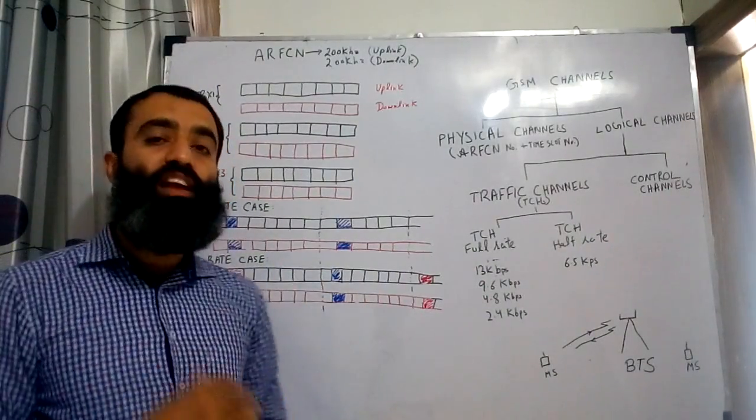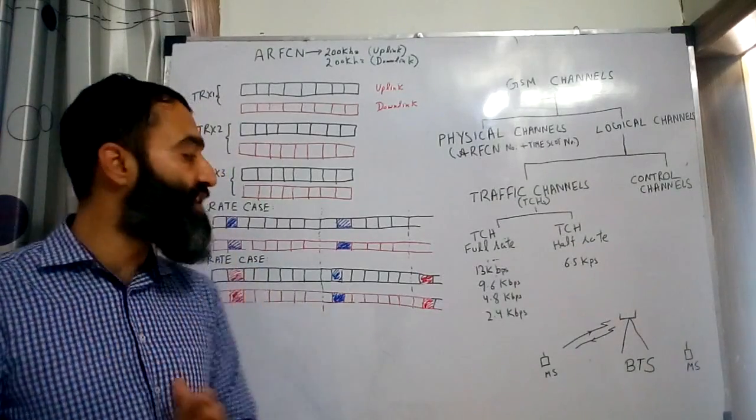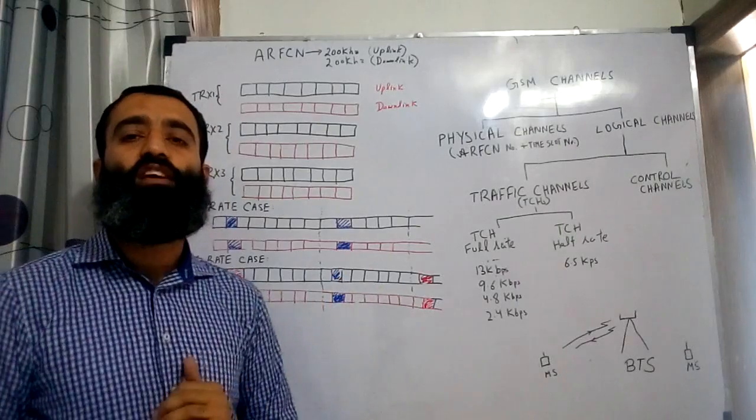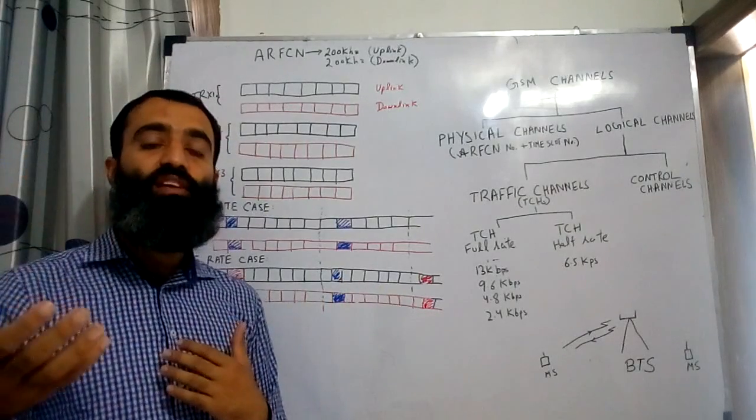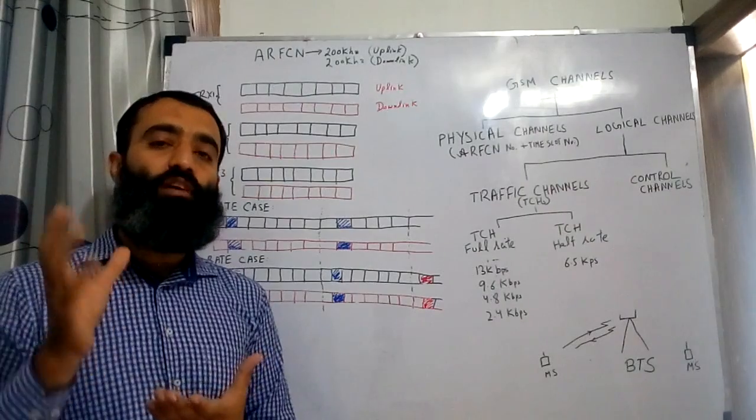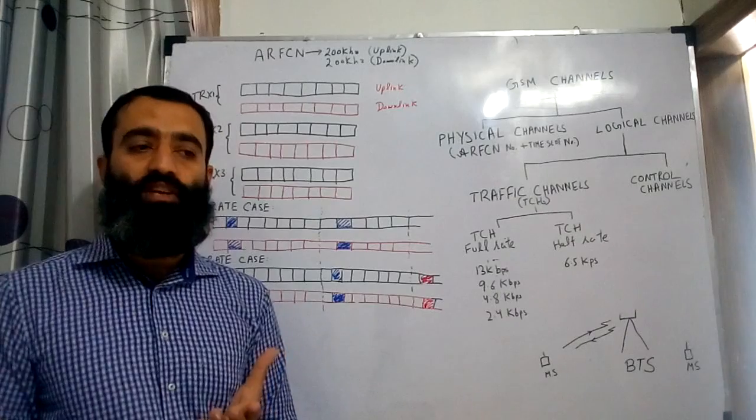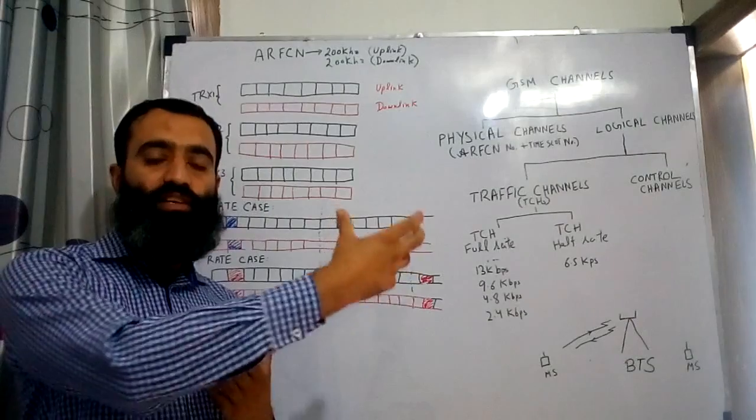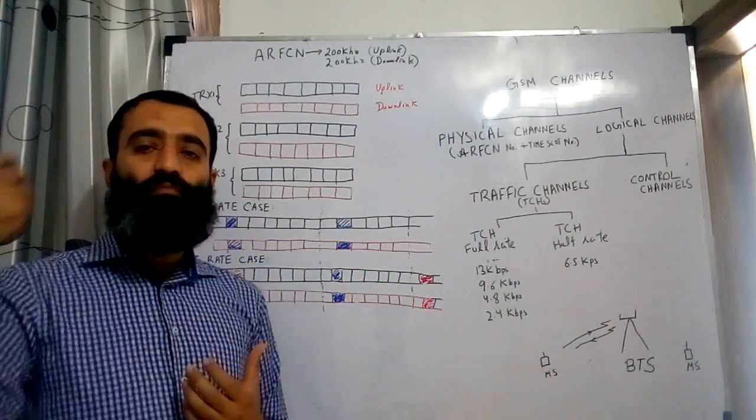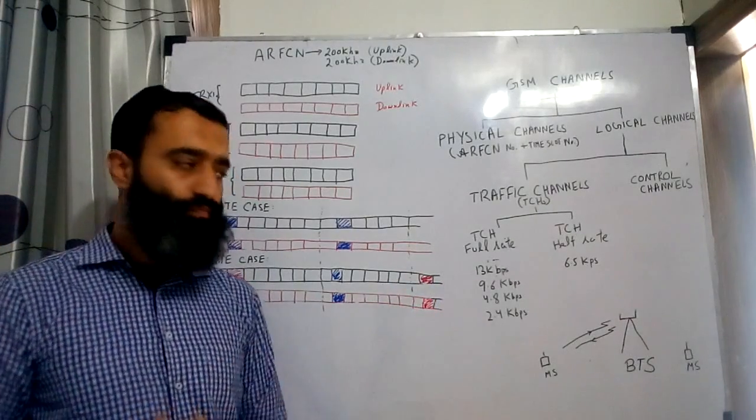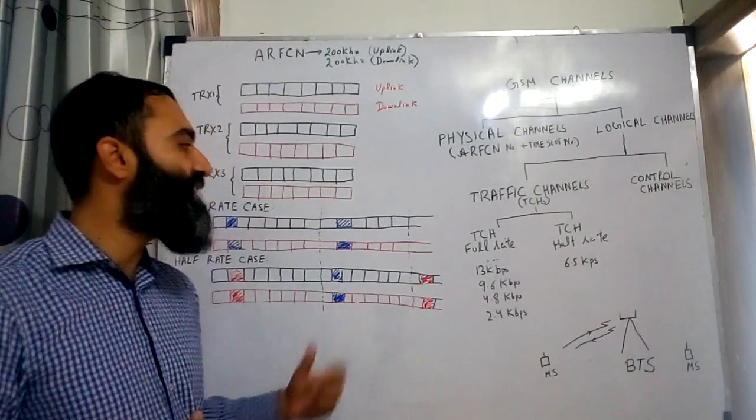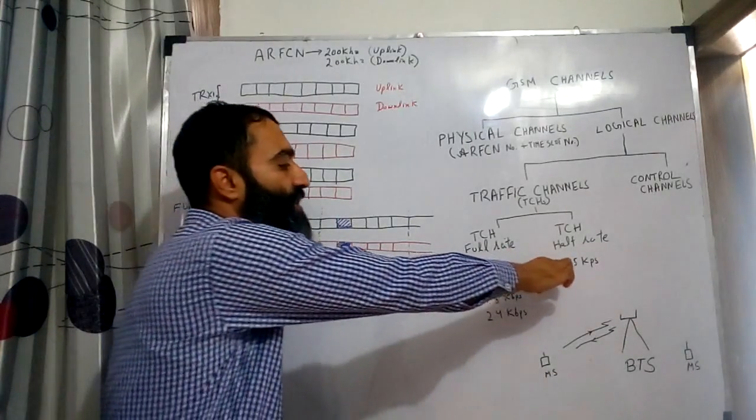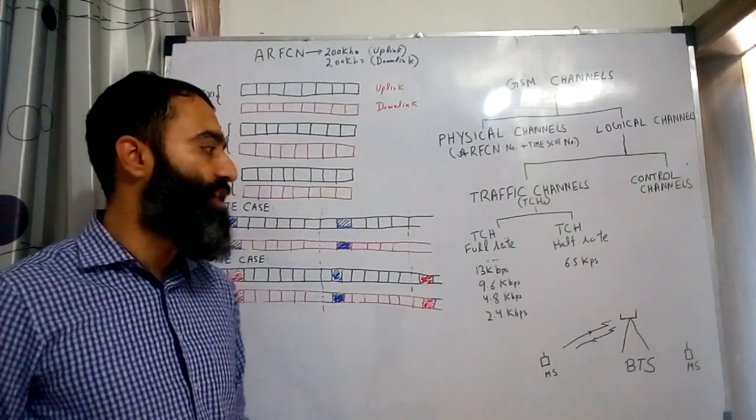In this way we can very well see that we can accommodate 16 users to this frequency. So our capacity has been doubled, but we are assigning those users on an alternate basis—8 users in the first frame, remaining 8 users in the next frame, and then the previous 8 users in the third frame. In this case you can very well see that the speech rate that was 13 kbps for the full rate has now been halved to 6.5 kbps.